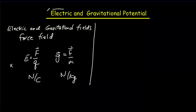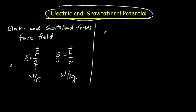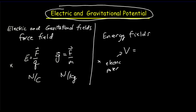When we start talking about electric and gravitational potential, what we're really talking about is energy fields. Once again, we consider some point in space and bring a test charge or a test mass to that place. The electric potential — we're going to use the symbol V — will equal the electric potential energy per unit charge. For gravitational potential, it would be the gravitational potential energy per unit mass.